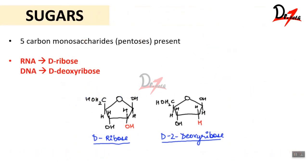Now let's talk about sugars — the second component of nucleotides. Sugars are five-carbon monosaccharides, or pentoses. In RNA there is D-ribose, and in DNA there is deoxyribose. This is where the names RNA and DNA come from: ribose gives ribonucleic acid, and deoxyribose gives deoxyribonucleic acid. The major structural difference is that ribose has an OH group at the 2' position while deoxyribose has just H.